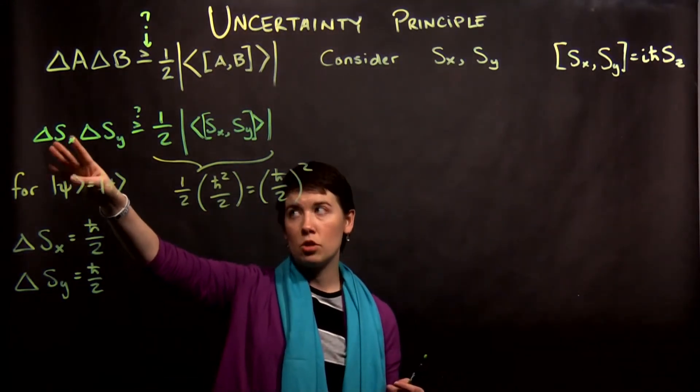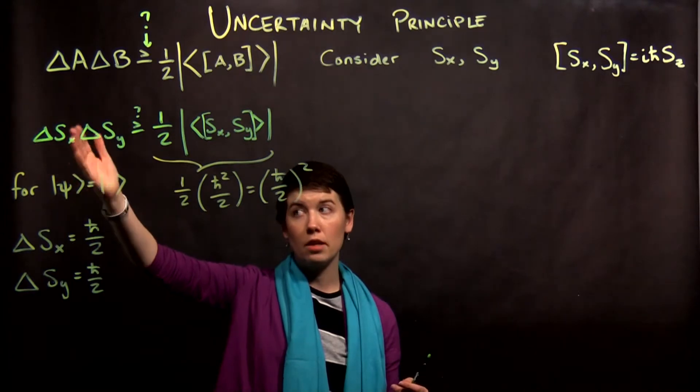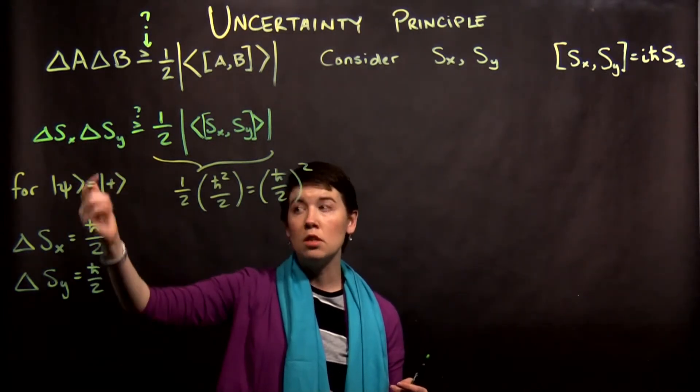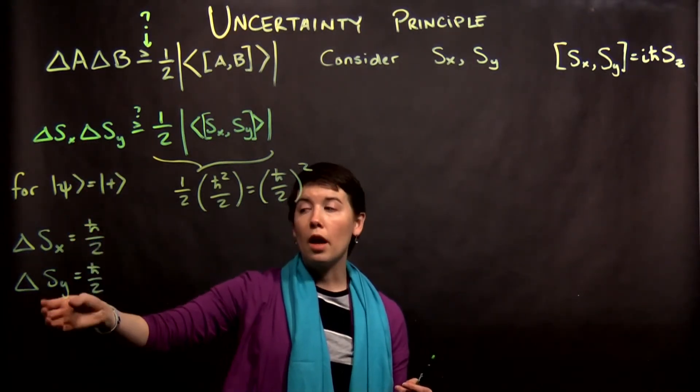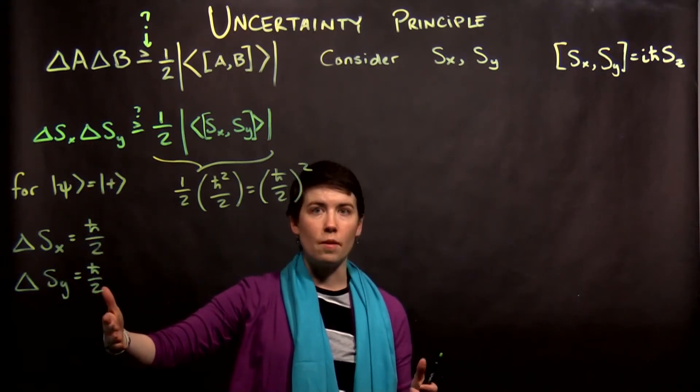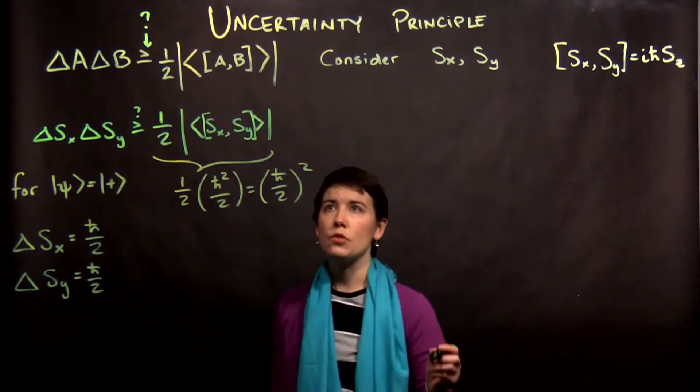And so the deviation for the operator Sx for a spin-up state in Z is going to be h bar over 2, and for the spin y state it will be the same thing.